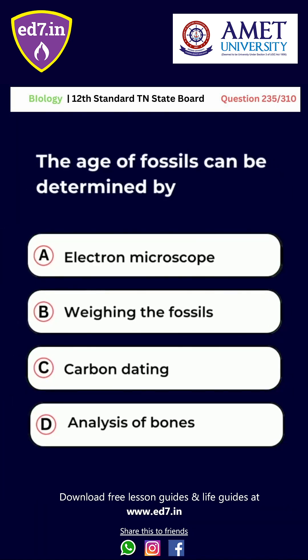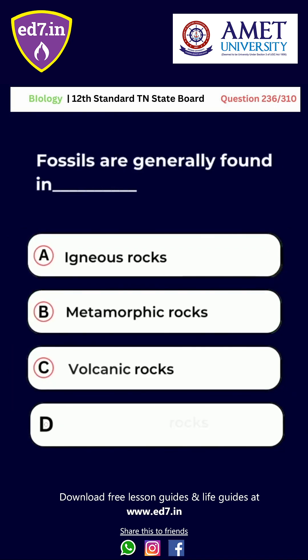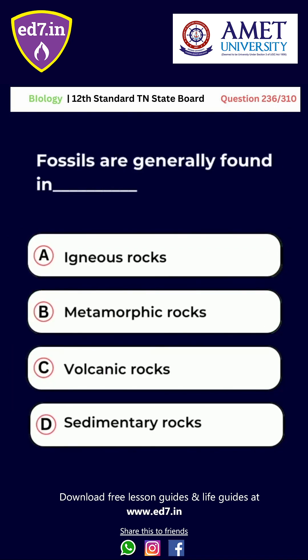Question number 235: The age of fossils can be determined by A. Electron microscope. B. Weighing. C. Carbon dating. D. Analysis of bones. The right answer for this question is option C, carbon dating.